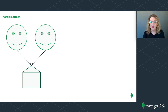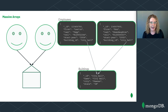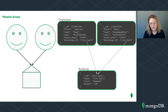Let's consider the case where information about employees and their building needs to be frequently displayed or updated together. Then we may want to separate the information into two collections and use references to link them. Here we're creating a manual reference between the employee's building_id field — in this case City Hall — and the building's _id field. We have completely separated our data, eliminated massive arrays, and have no data duplication. The drawback is that if we need to retrieve employee and building information together, we'll need to use $lookup to join the data.